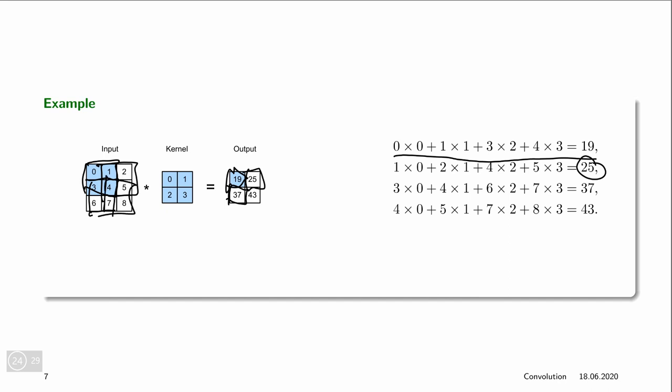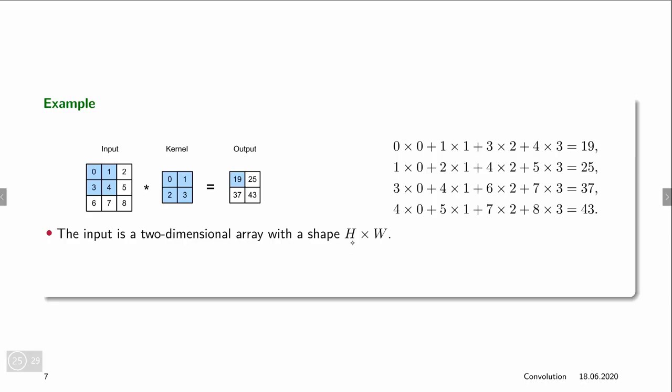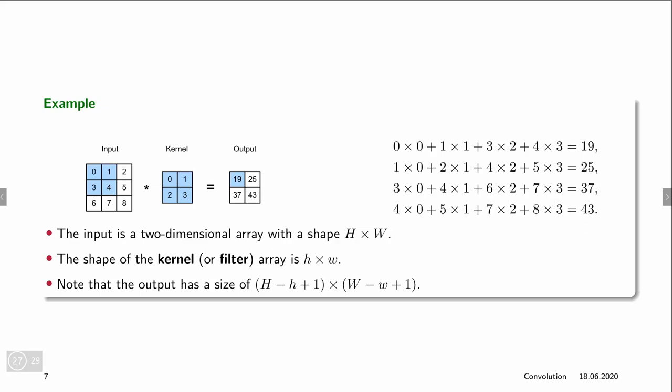Then we move it into the next row starting from the left to compute the next entry of the output and move it over until we have placed it everywhere in the input image where it's possible. Now one thing that you can observe is that for an input of size capital H times capital W and a kernel of size lowercase h and w, the size of the output is actually reduced if we do this.